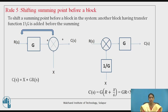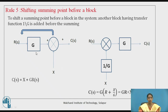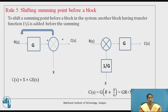Rule number 5 states: shifting a summing point before a block. To shift a summing point before a block, another block having transfer function 1/G is added before the summing point. If you see in this figure, this is the summing point and this is the G block, and I need to shift this summing point before the block. Then I need to add one more block having transfer function 1/G before that summing point.